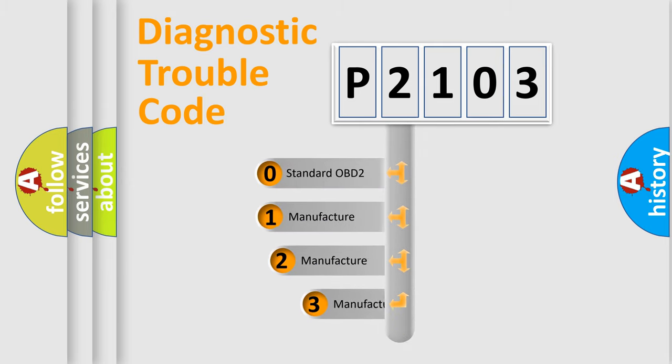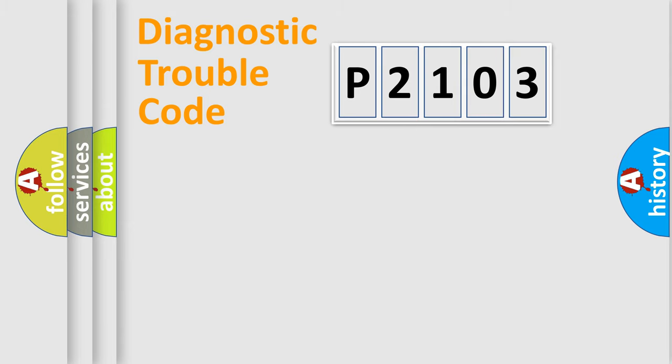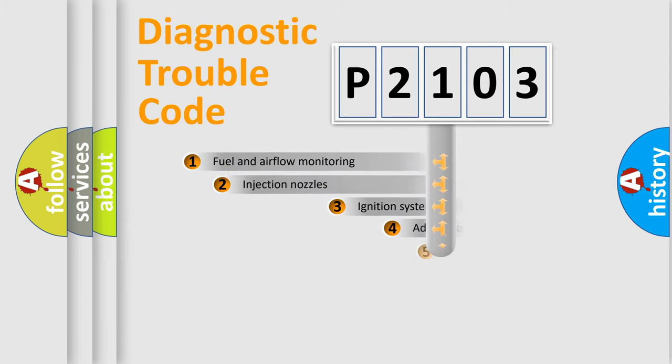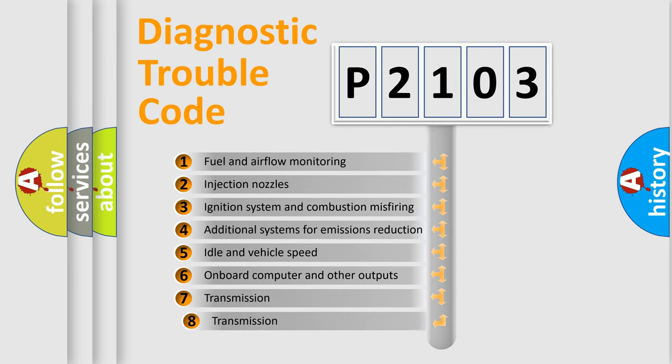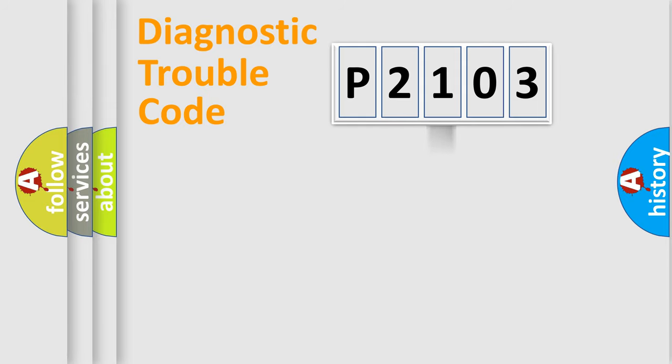If the second character is expressed as zero, it is a standardized error. In the case of numbers one, two, or three, it is a more prestigious expression of the car specific error. The third character specifies a subset of errors. The distribution shown is valid only for the standardized DTC code.